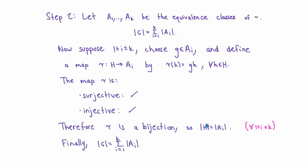Plugging this into the formula for the order of G, we have that the order of G equals k times the order of H. Both quantities on the right-hand side are integers, so this allows us to conclude immediately that the order of H must divide the order of G. That concludes the proof of Lagrange's theorem.